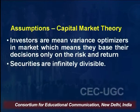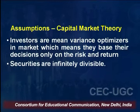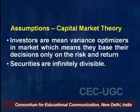Sharpe has taken certain assumptions while developing this capital market theory. Investors are mean-variance optimizers — mean is the return and variance is the risk. Every investor wants to optimize the risk and return combination, and they base their decisions only on risk and return. There is no other consideration other than risk and return.